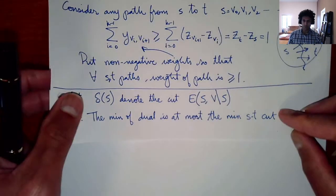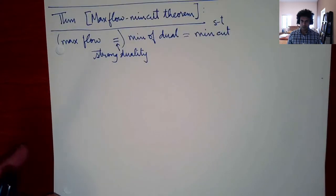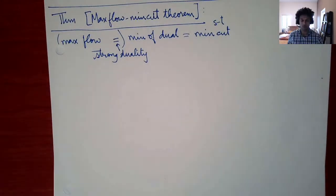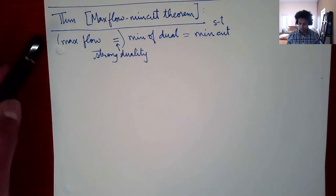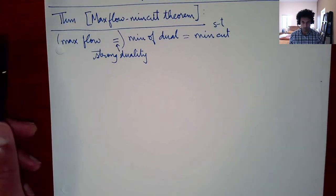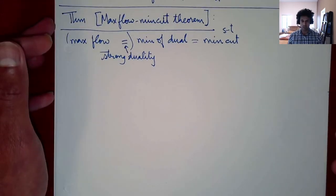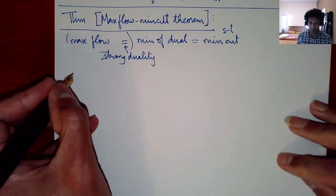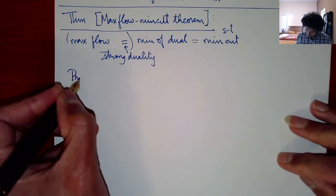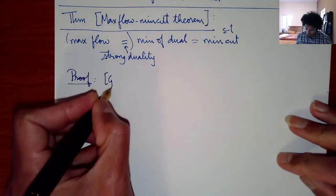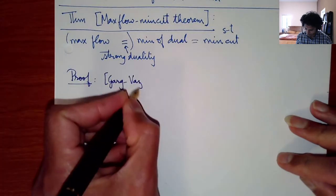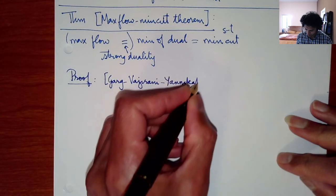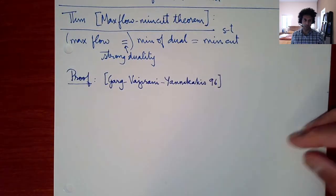What we are now going to prove is the famous max flow min cut theorem: the min of the dual equals the min ST cut, and by strong duality the max flow equals the min of the dual, and therefore the max flow equals the min cut. This is an incredibly slick and beautiful proof by Garg, Vazirani, and Yanakakis — a true gem that uses duality.